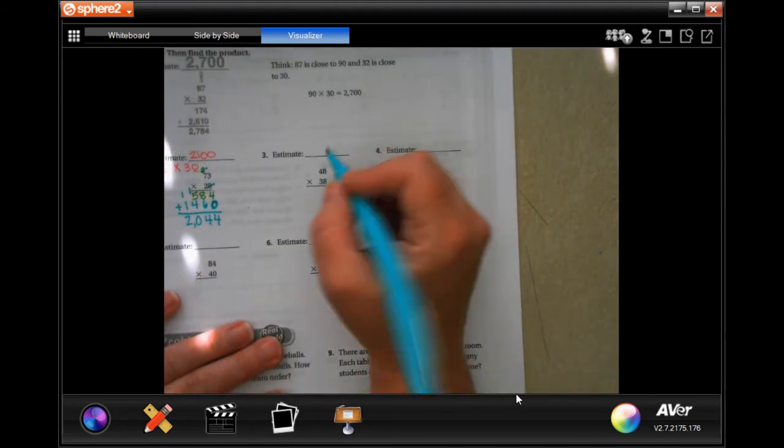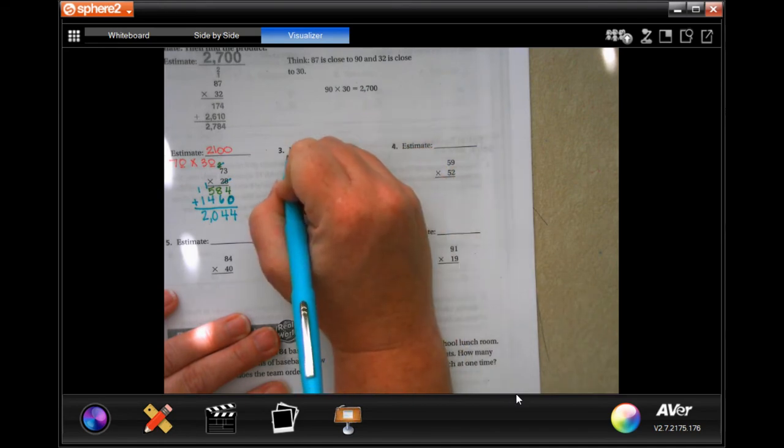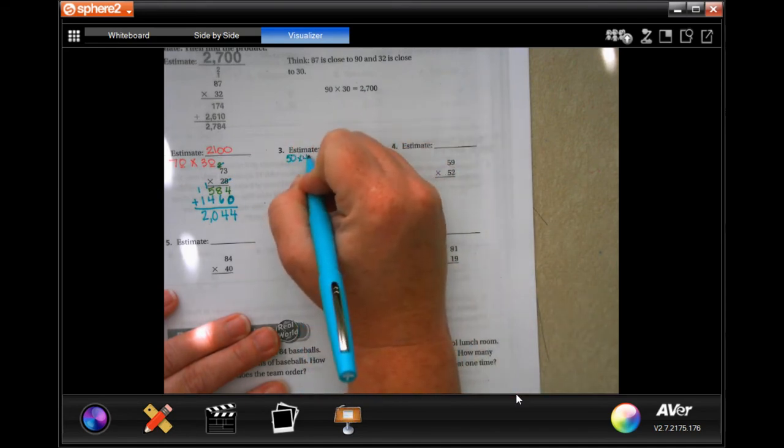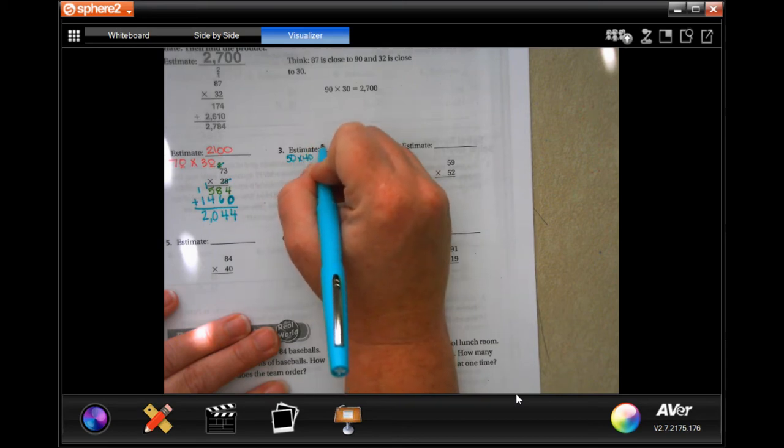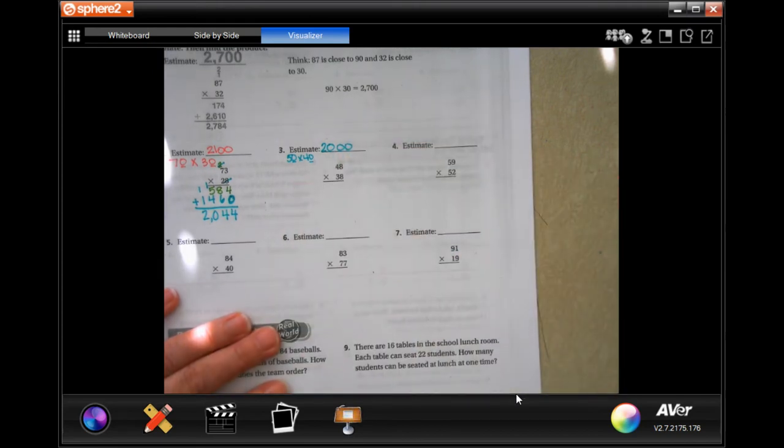We're going to go ahead and do that again. 48 would round to 50, and 38 would round to 40. Well, 5 times 4 is going to be 20, and then I still need to add on those two zeros. Don't let that fool you just because 20 ends in a zero.